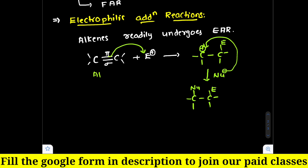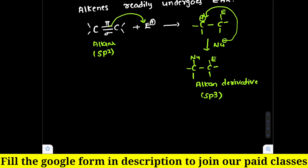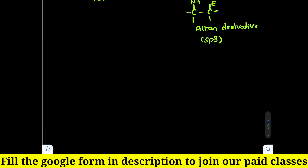Here the alkene is converted into an alkane derivative. The reaction also has a specific name based on the electrophile and nucleophile involved. In this overall reaction, sp2 hybridized carbons are converted into sp3 hybridized carbons. In addition reactions, at the cost of one pi bond, two new sigma bonds are generated around the same two carbons.